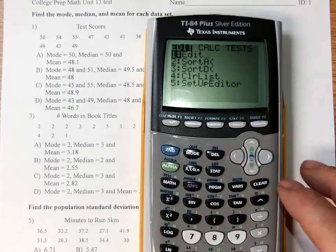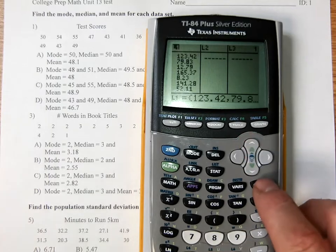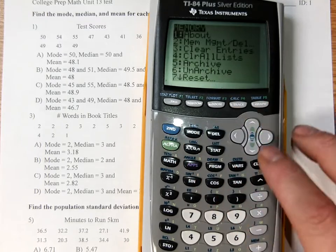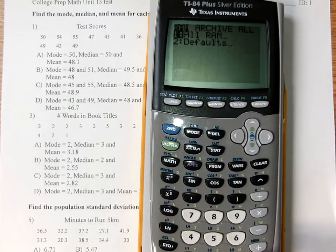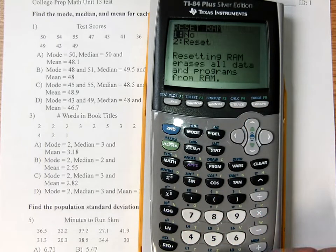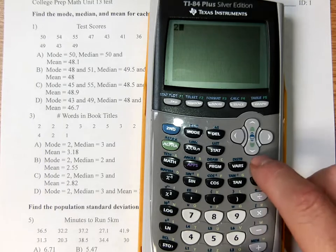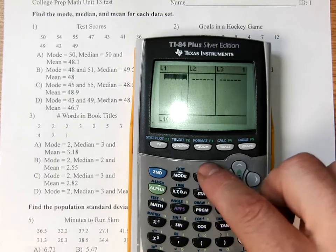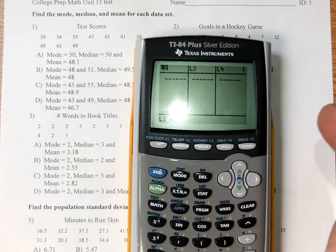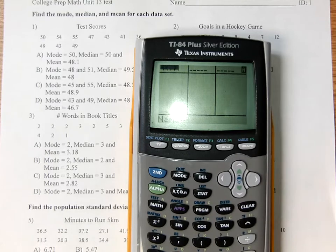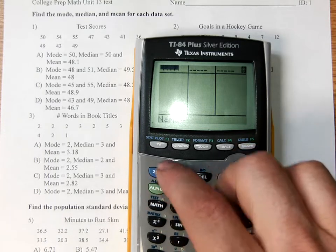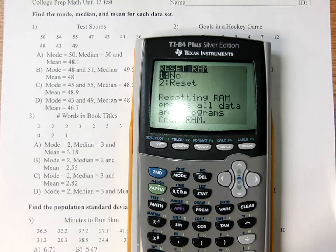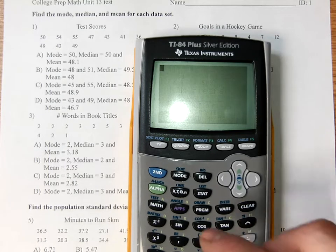So we've got our TI-84 here. We're going to go stat, edit. Make sure column 1 is here. If column 1 is not here, what you have to do is quit out, go to the memory, reset the memory, and column 1 will be there. If you get rid of column 1, it's pretty easy to delete it at the top.